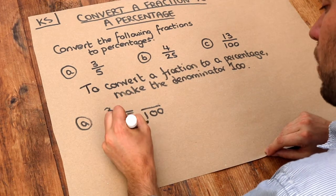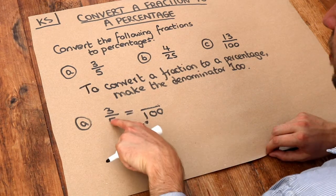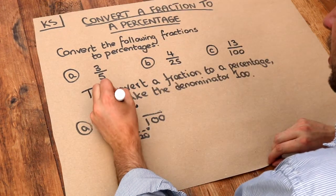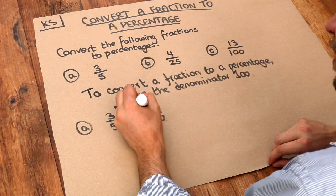Well, 5 goes into 100, 20 times. So if we multiply the denominator by 20, we also need to multiply the numerator by 20. 3 times 20 is 60.